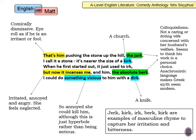She's irritated, annoyed, and angry because she feels neglected. Mrs Sisyphus is not a typically doting or caring wife — she seems to think his work is a choice rather than a punishment. The language is very anachronistic and colloquial; these words would not have been used at the time the Greek myth was first written or spoken. That increases the sense of relatability.